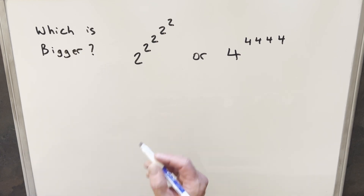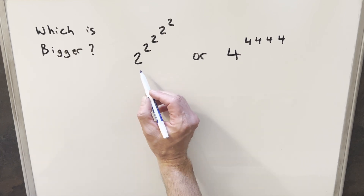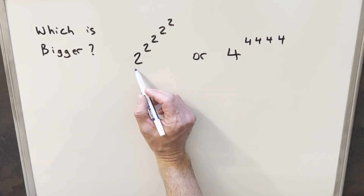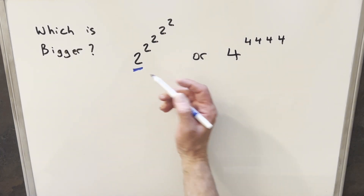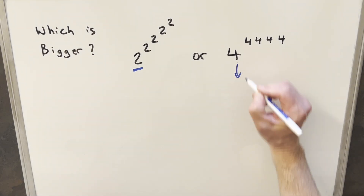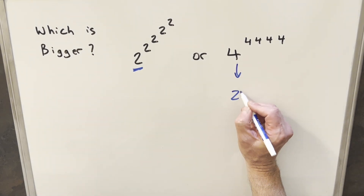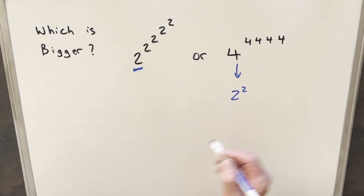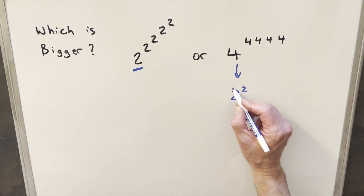Okay, now to get started with this, this wasn't very difficult just because we sort of have the same base. We have 2 here, and we can just write 4 as 2 squared. So I think the simplification is going to come pretty quick.